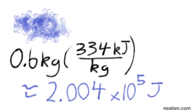Now we go to the 0.6 kilograms of ice at zero degrees Celsius. Since it's at zero degrees, which is the threshold, it's going to start turning into liquid water as soon as it has more energy. We multiply 0.6 kilograms by 334 kilojoules per kilogram, which means it takes 2.004 times 10 to the fifth joules to melt the ice.